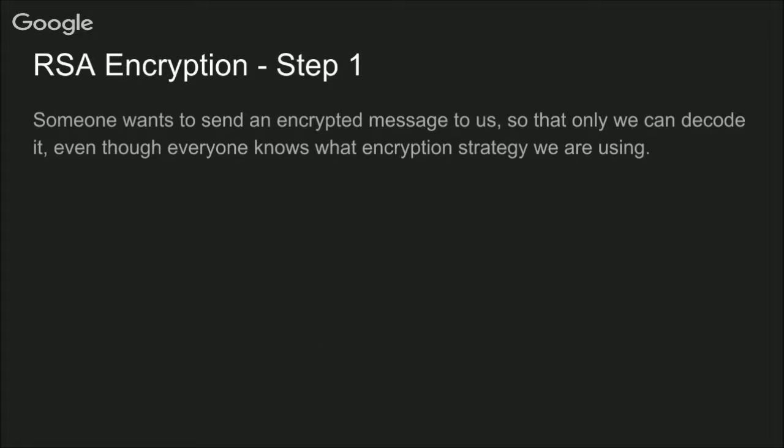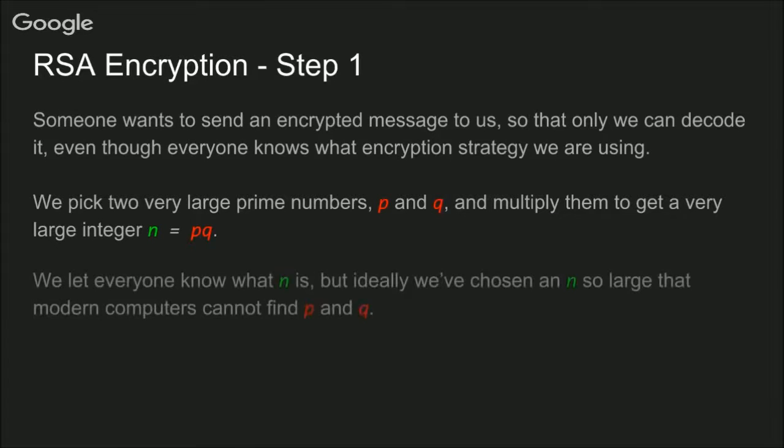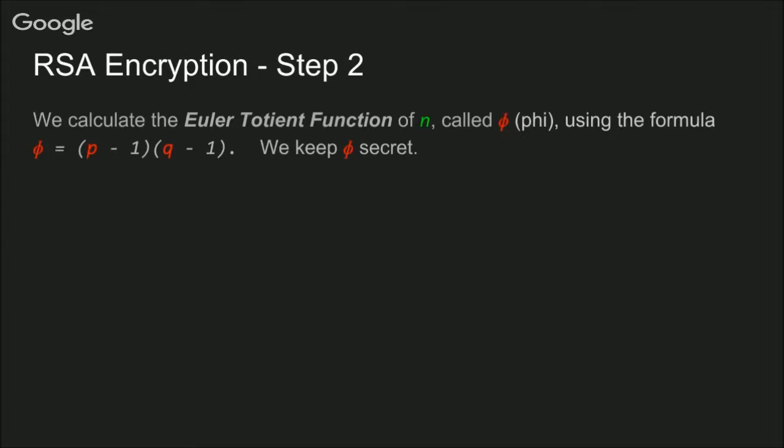So now that we understand modular arithmetic, we can move on to learn RSA encryption. Let's say someone wants to send us an encrypted message so that only we can decode it, even though everyone knows we're using RSA. What we're going to do is pick two large prime numbers, P and Q, and we're going to multiply them to get another large number, N. We'll let everyone know what N is. But ideally, we've picked N to be so large that modern computers cannot prime factorize it to find P and Q. And so you can keep track of them, we'll let all the private numbers be red and all the public ones be green.